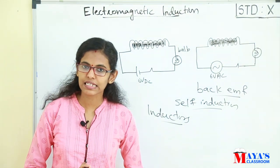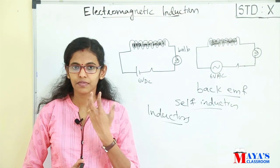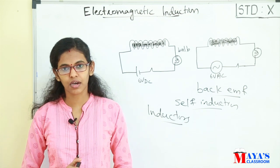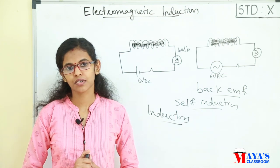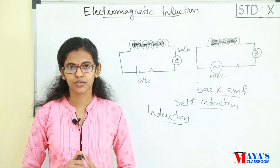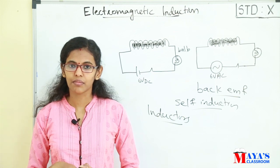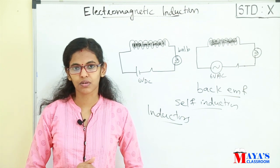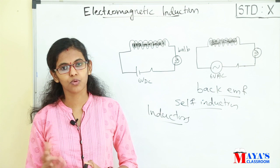Inductors are not effective in DC circuits. This is because there is no flux variation in DC, so the inductor cannot control current in a DC circuit. It is not possible to control current with an inductor in DC.